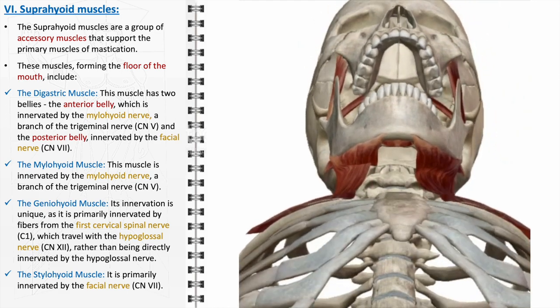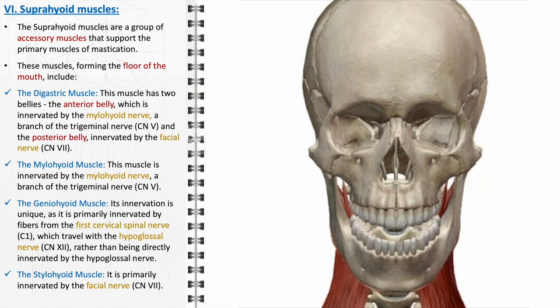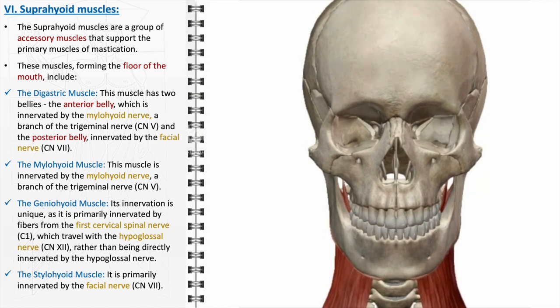Together, the suprahyoid muscles are integral in various functional activities, including mastication, swallowing, and speech. They also play a significant role in maintaining the posture and position of the hyoid bone, which is essential for the structural integrity of the upper airway. Dysfunction in these muscles can lead to difficulties in swallowing, dysphagia, and other oropharyngeal disorders.